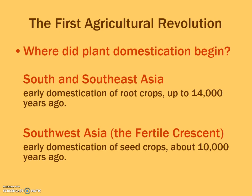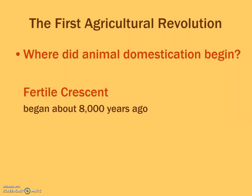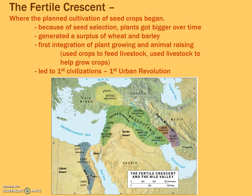Seed crops were probably first domesticated in Southwest Asia, while root crops were first in South and Southeast Asia. Carl Sauer is one of the major geographers who studied the Neolithic revolution and identified eleven areas where agricultural innovation occurred, though you really just need to know those big five. Plant and animal domestication together both started in the Fertile Crescent, where major crops like wheat and barley were grown and the cow was first domesticated. This will also come up in the next chapter on urban geography, because the first agricultural revolution led to the first urban revolution and the creation of cities.